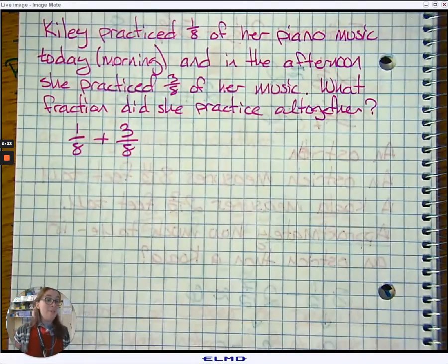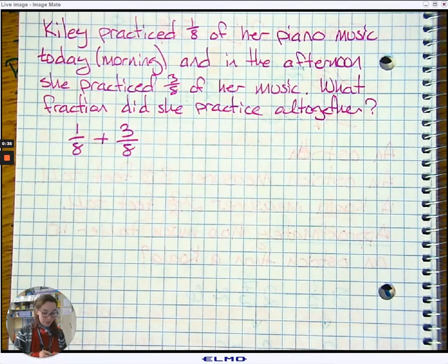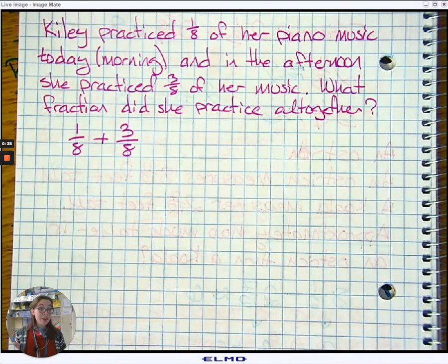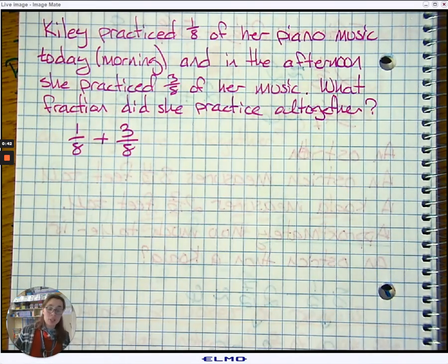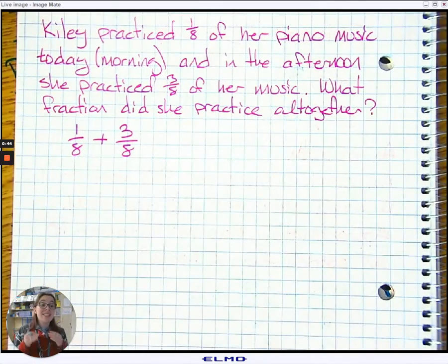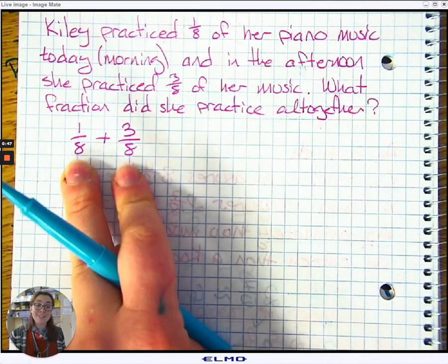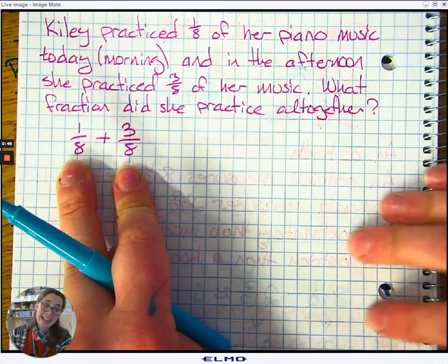Now, we have one really important thing here, and that thing is a common denominator. This is adding fractions with like denominators, which means that the denominators, numbers at the bottom, are the same. We have eighths across, which means we don't have to do anything. It's so nice.